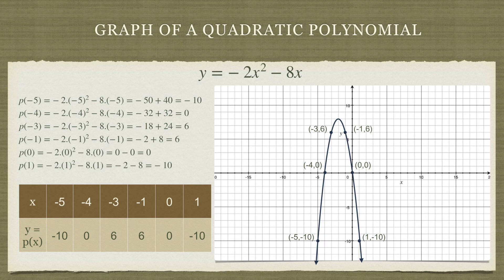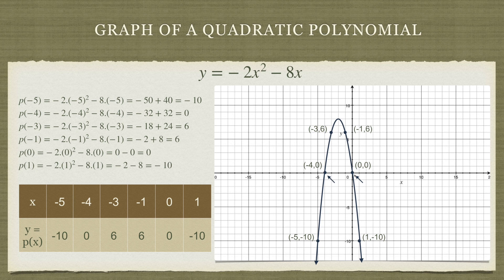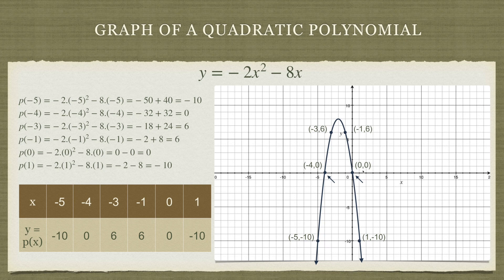Now, if you take a look at these two special points shown by the arrow, these are where the graph intersects the x-axis. Looking at the x-coordinates of these points, that is minus 4 and 0, we will see the value of the polynomial.